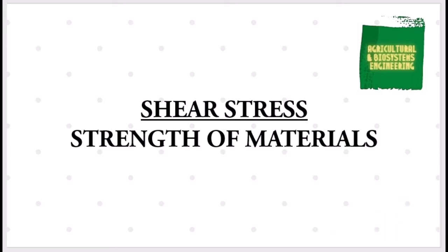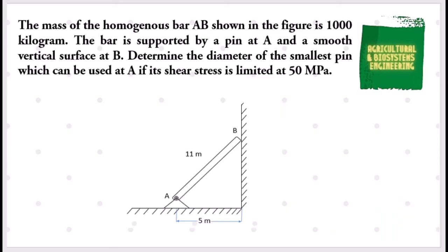This time, we will be solving this problem. The mass of the homogeneous bar AB shown in the figure is 1000 kg. The bar is supported by a pin at A and a smooth vertical surface at B. Determine the diameter of the smallest pin which can be used at A if its shear stress is limited at 50 MPa.